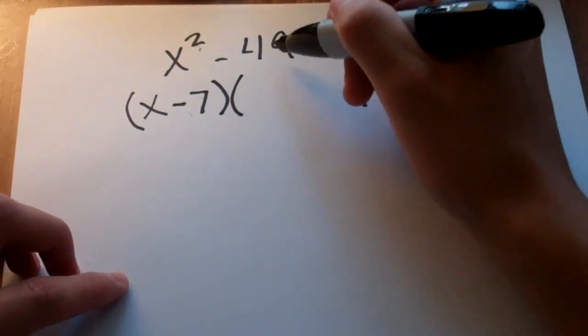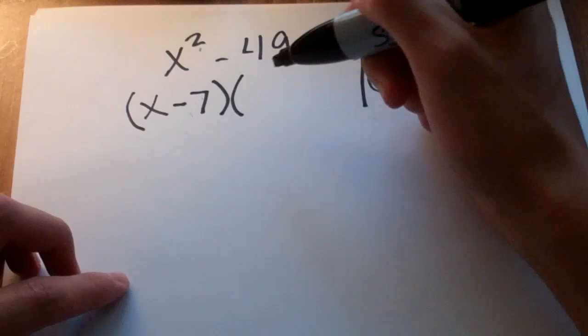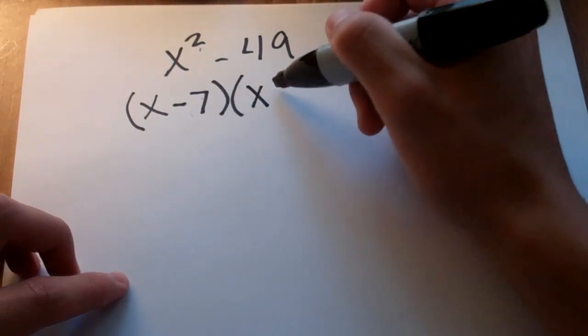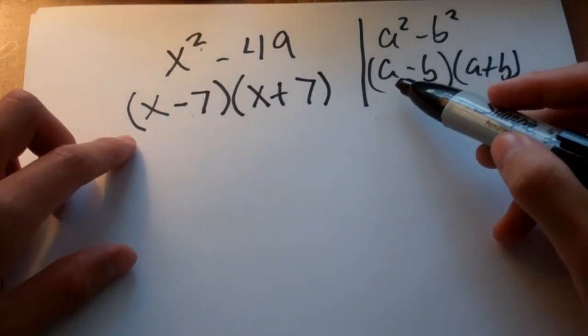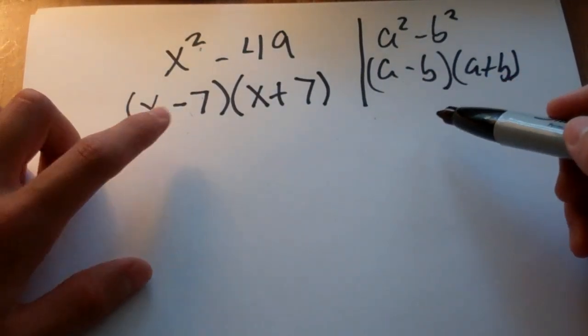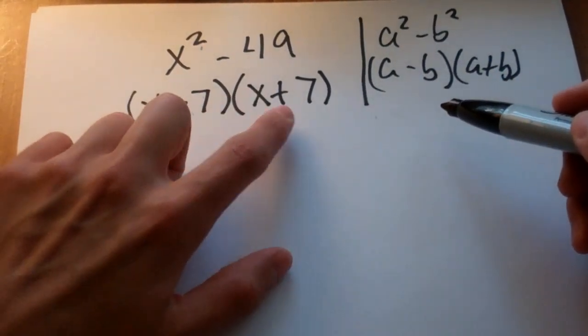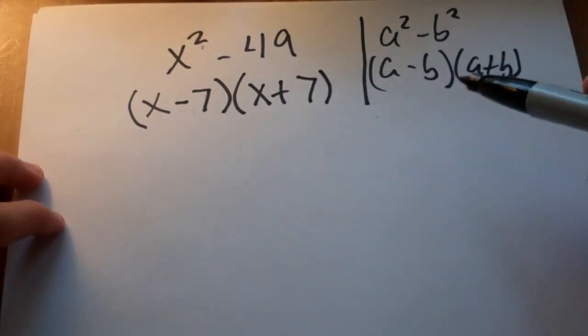a minus 7. And we've got x. I'm sorry, this is b. All right, a minus 7, and then we have a plus 7, a plus b. So, a minus b, a plus b. x minus 7, x plus 7.